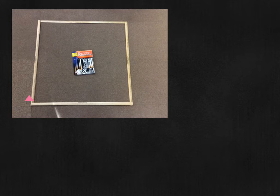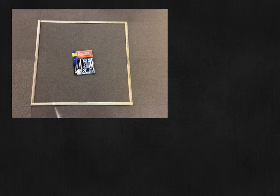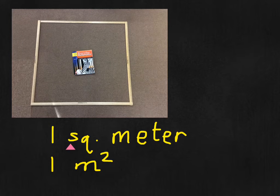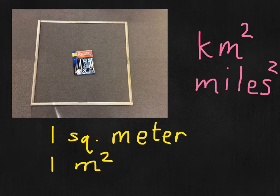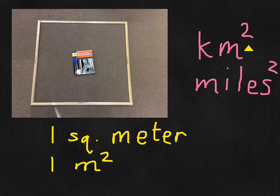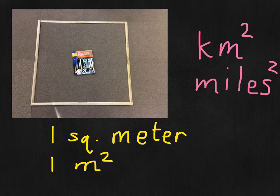You can get bigger too — these are meter sticks, so this is one square meter, and you can see the size of a math book there. One square meter, or one meter squared. And for really big spaces, like a city, you can use kilometers squared or square kilometers, or miles squared or square miles, to measure really large areas.